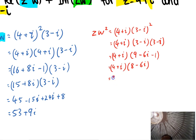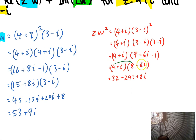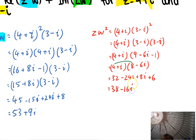Now multiplying 4 plus i by 8 minus 6i: 4 times 8 is 32. 4 times negative 6i is negative 24i. 8 times i is 8i. And i times negative 6i gives positive 6, because negative 6 times negative 1 gives positive 6. So 32 plus 6 is 38, and negative 24i plus 8i is negative 16i. So z w squared equals 38 minus 16i.